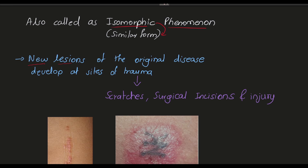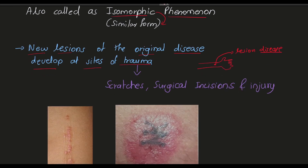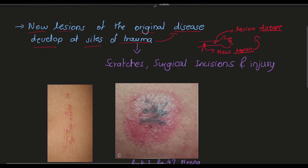It says that new lesions of the original disease will develop at the site of trauma. Consider this is a hand — here the lesion of the disease is present. If there is any trauma to the normal skin, a new lesion also develops there, which is the same as that of the original disease. This is called Koebner's phenomenon.